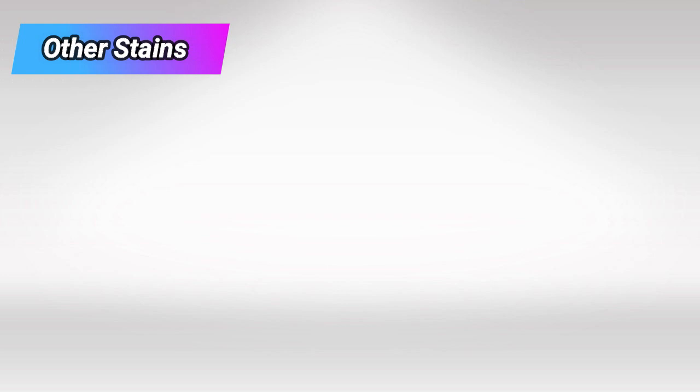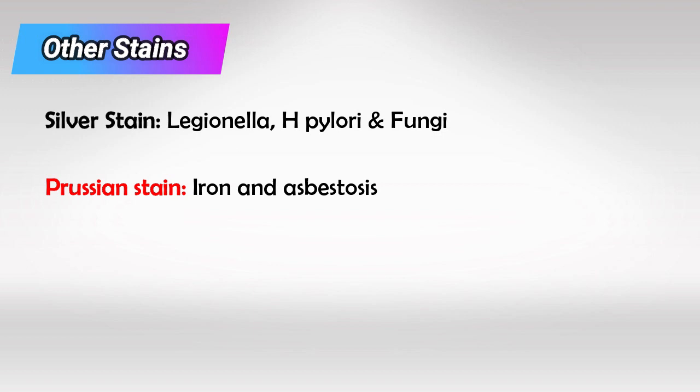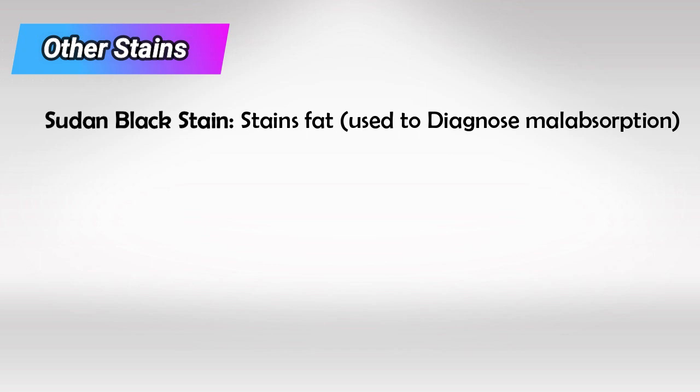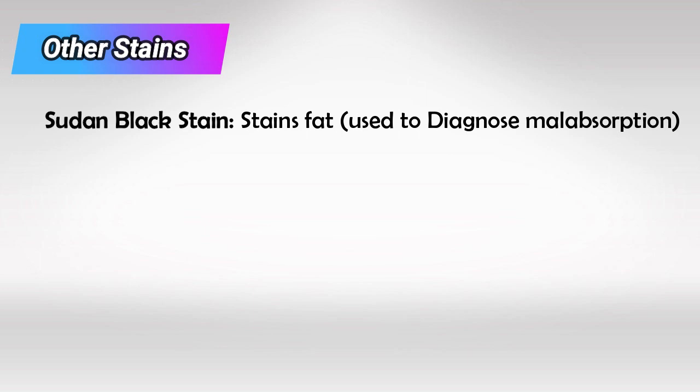Here are some other very important stains. Silver stain can be used for Legionella, H. pylori, and fungi. Prussian blue stain can be used to stain iron and in asbestosis — this is a very important one. Wright's stain can be used to stain RBCs and platelets. When using H&E stain, calcium will appear black or dark brown. Sudan black stain is used to stain fat, and we use this with stool samples to diagnose malabsorption. Congo red stains amyloidosis.